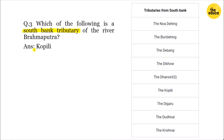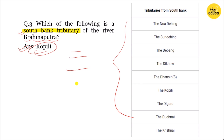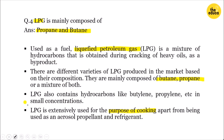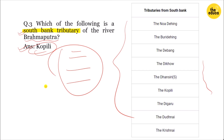The next question is: which of the following is a south bank tributary of the river Brahmaputra? The answer is Kopili. The other options are not south bank tributaries. We discussed this as a memory-based question.